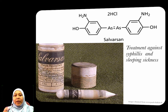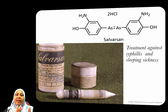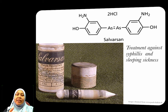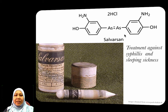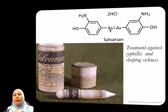One of the first drugs was Salvarsan. Salvarsan is actually made of arsenic and was used as a treatment against syphilis and sleeping sickness.